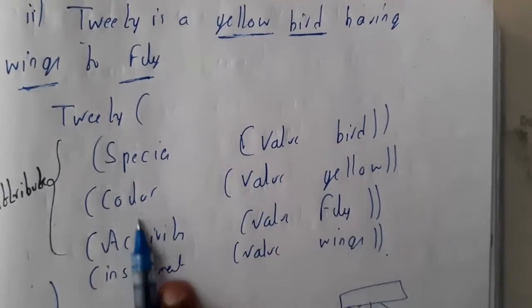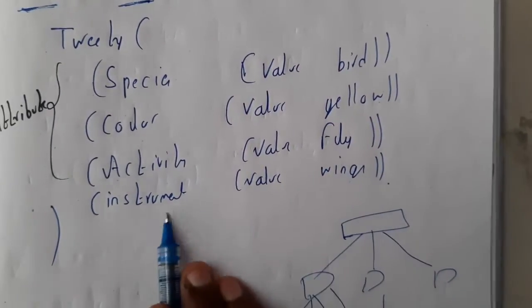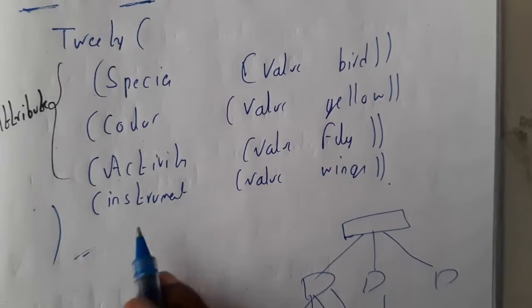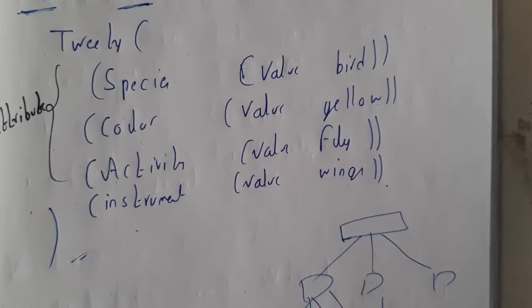Tweety: species value bird, color value yellow, activity value flies, instrument - how it is flying? With the help of wings. So instrument wings. In this way you can represent. I hope everyone got a clear idea on this.